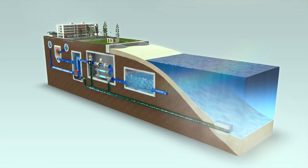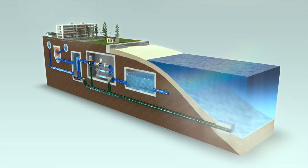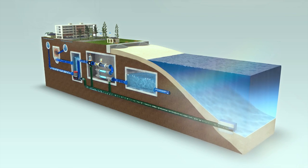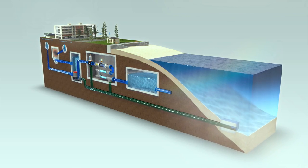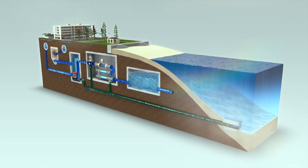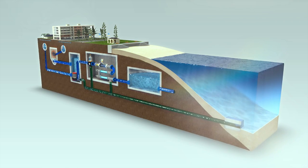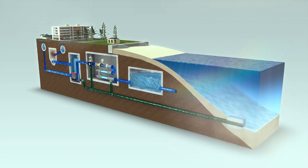The Bondi Stormwater Scheme is a state-of-the-art water recycling system that captures and treats the stormwater flowing down the Bondi catchment. The scheme transforms polluted water into safe, usable water that would otherwise drain into the ocean.